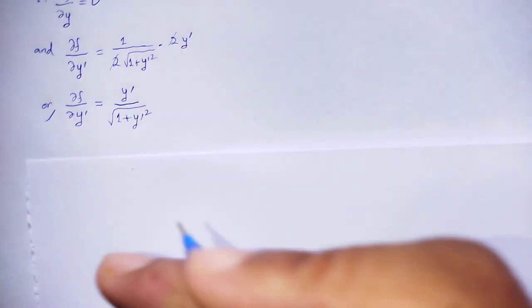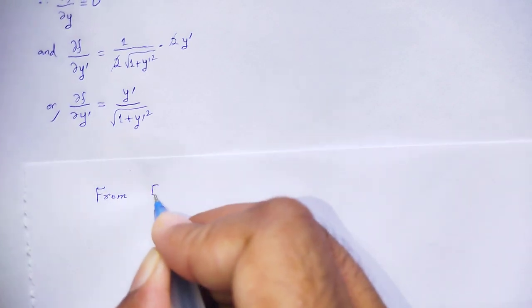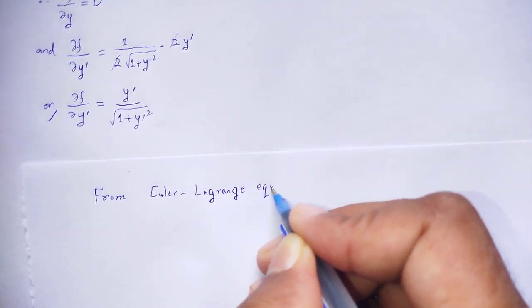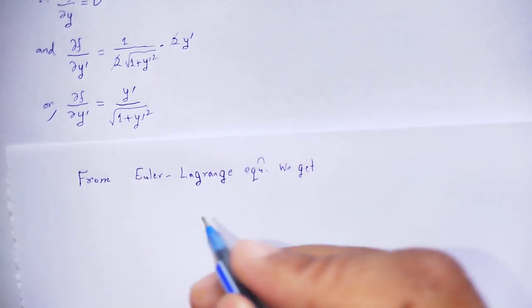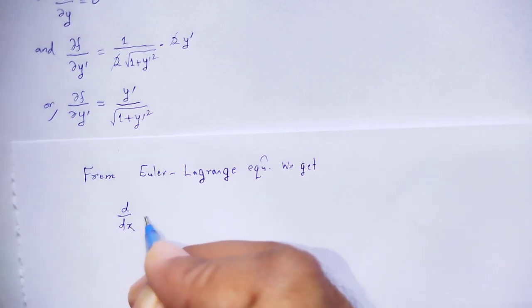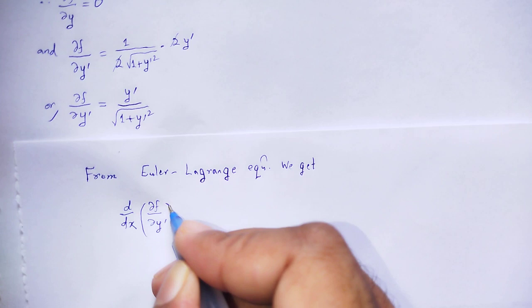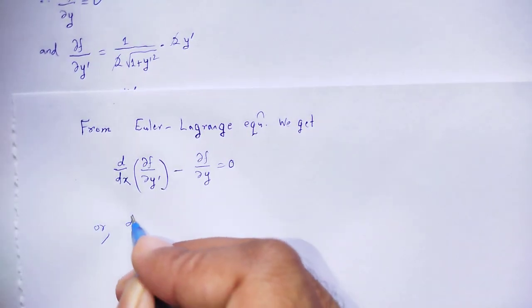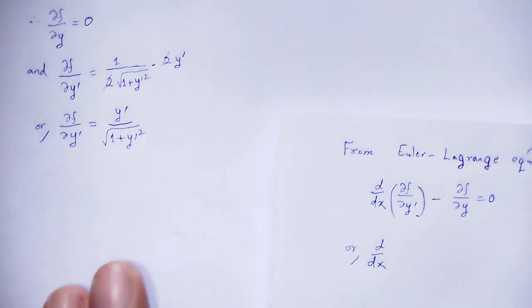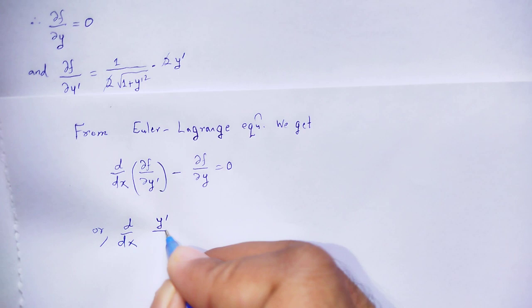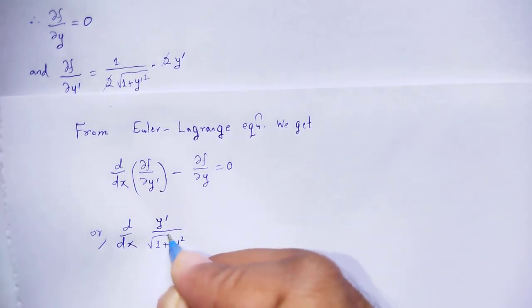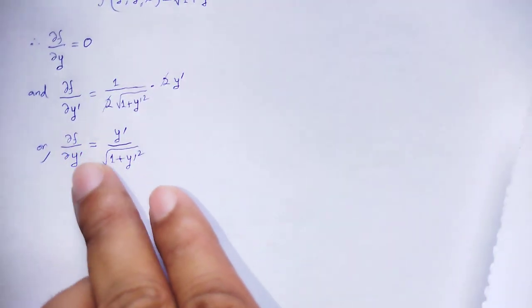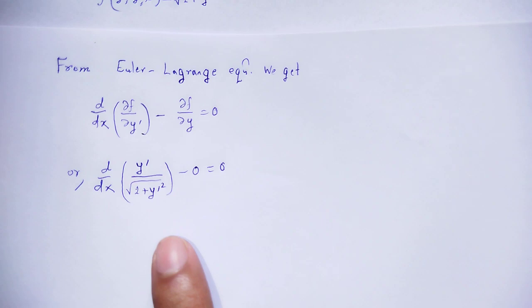Applying the Euler-Lagrange equation, d/dx(∂f/∂y') − ∂f/∂y = 0. Substituting the values: d/dx of [y' / sqrt(1 + y'²)] minus 0 equals 0.